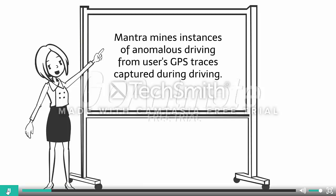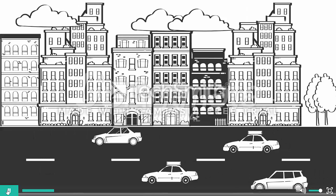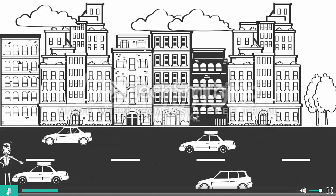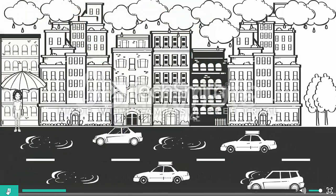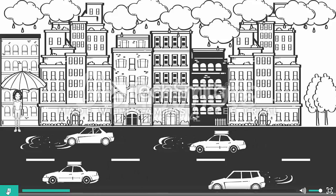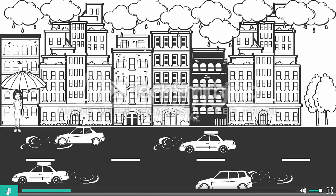Let's look at some applications. Someone is clearly over-speeding on this road. I am from the police and I am empowered with MANTRA. It's raining today but someone is still driving at 80 miles per hour. I am from the police and I am empowered with MANTRA — you are over-speeding for a rainy day.